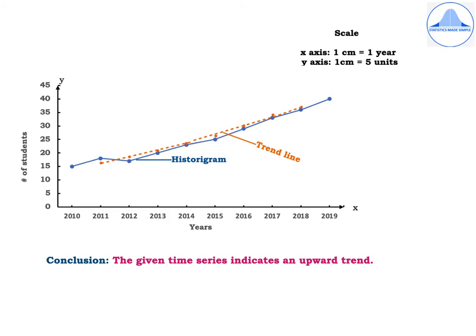Now we need to plot the actual values and the trend values. On the x-axis, take the years from 2010 to 2019, and on the y-axis choose an appropriate scale. Corresponding to each year, mark the number of students: 15 for 2010, 18 for 2011, and so on up to 36 for 2018 and 40 for 2019. Join all these dots with a line in blue color and mark it as the historigram.